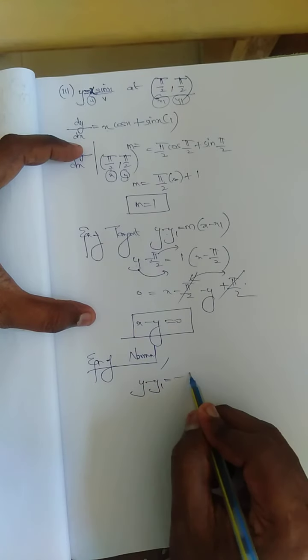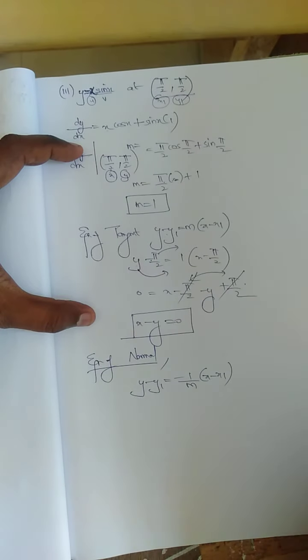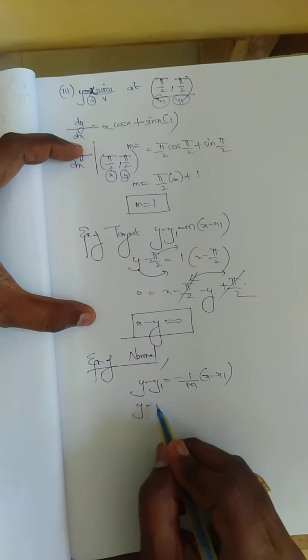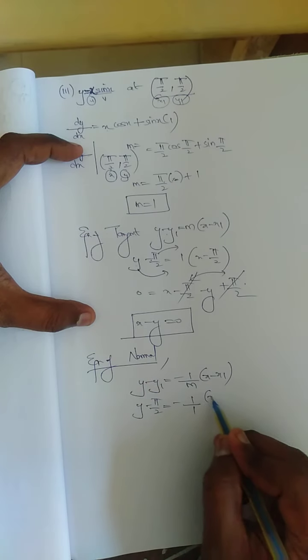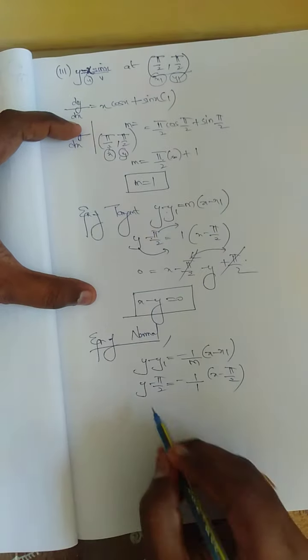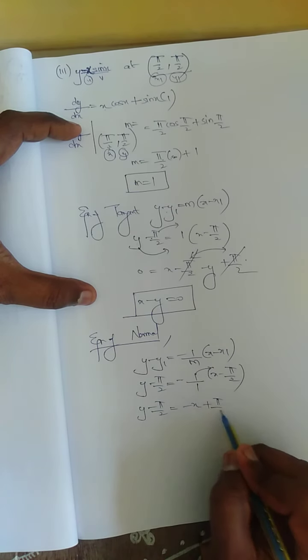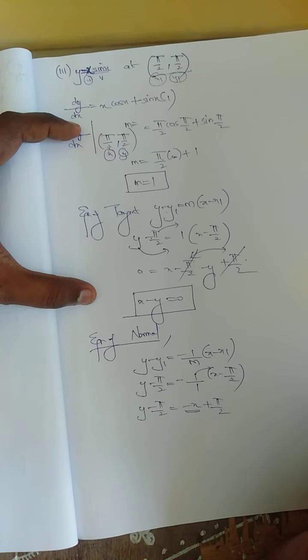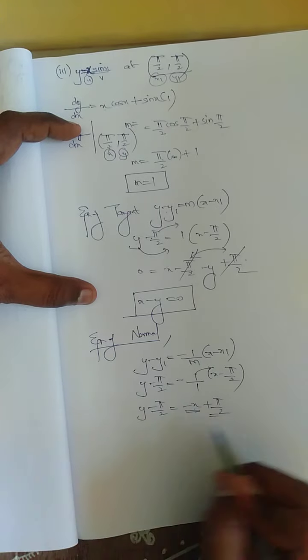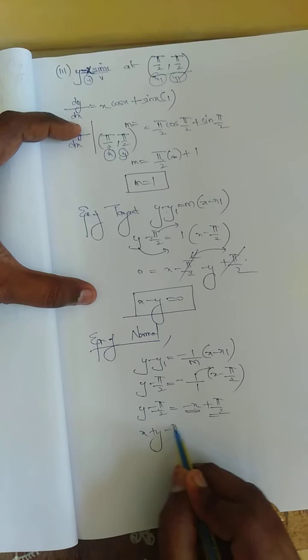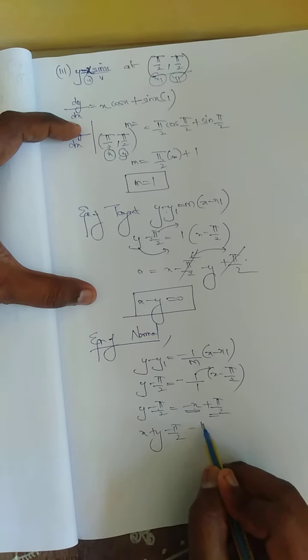Equation of normal: y - y₁ = (-1/m)(x - x₁). With y₁ = π/2, m = 1, x₁ = π/2: y - π/2 = -1·(x - π/2), so y - π/2 = -x + π/2. Rearranging: x + y = π/2 + π/2 = π, giving x + y - π = 0 or x + y = π. Both answers are correct.